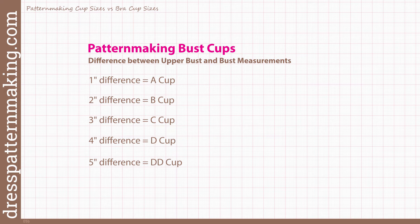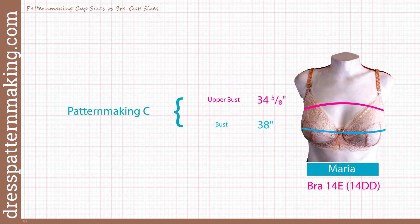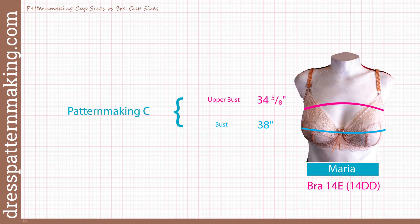The focus for this video is understanding how pattern making bust cups work. In Didi's case, her bra size and her pattern making cup size are very similar — if I put her measurements into a bra cup formula it says she's an A bra cup. Since I have more than three inches between my upper bust and bust, I'm a bit bigger than a C cup for pattern making purposes. In bras I take 14DD or 14E depending on the make and style — that's Australian sizing.